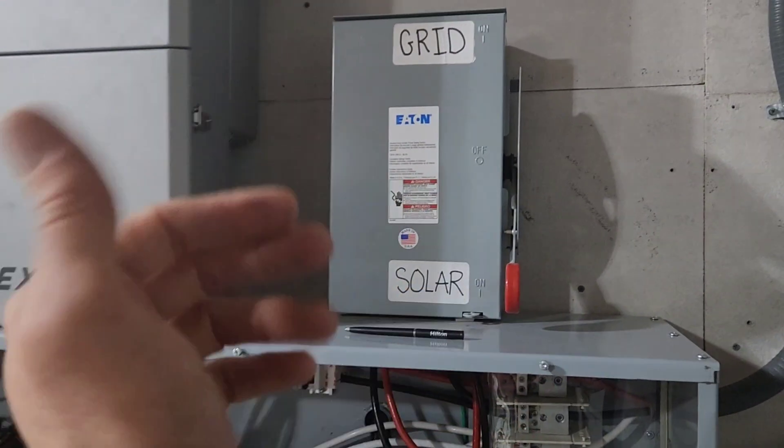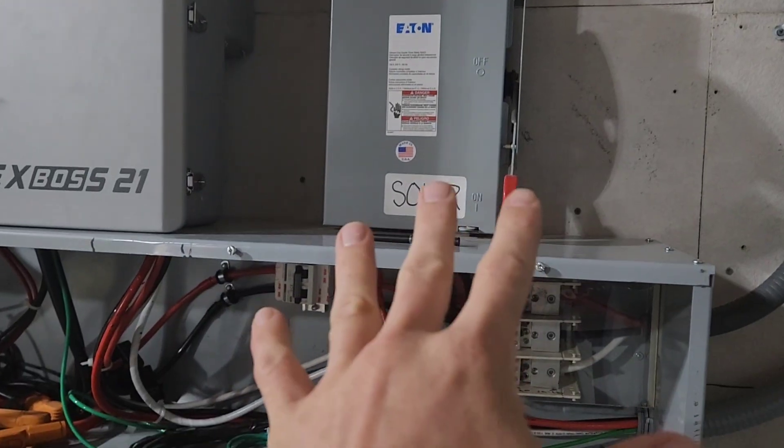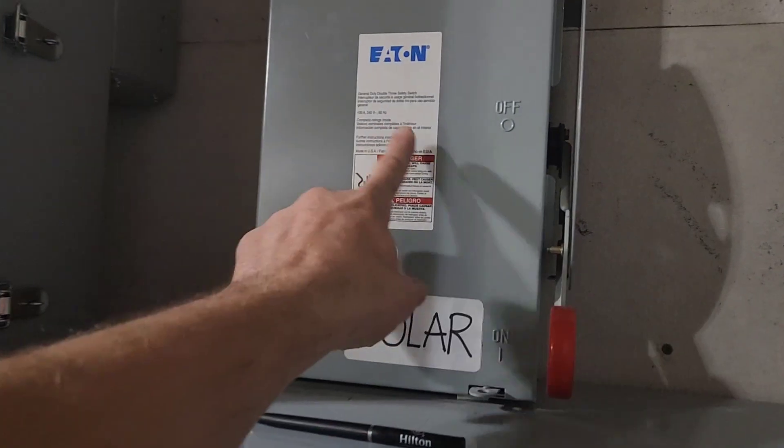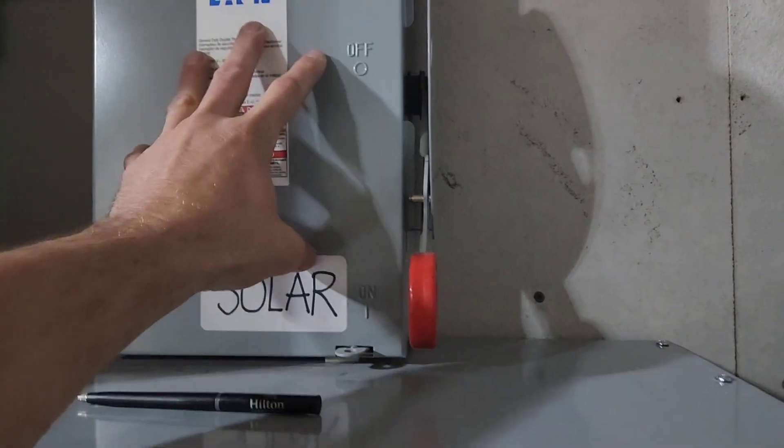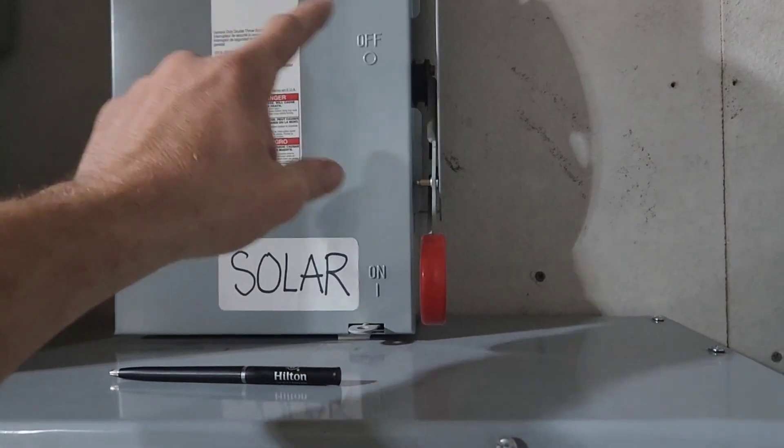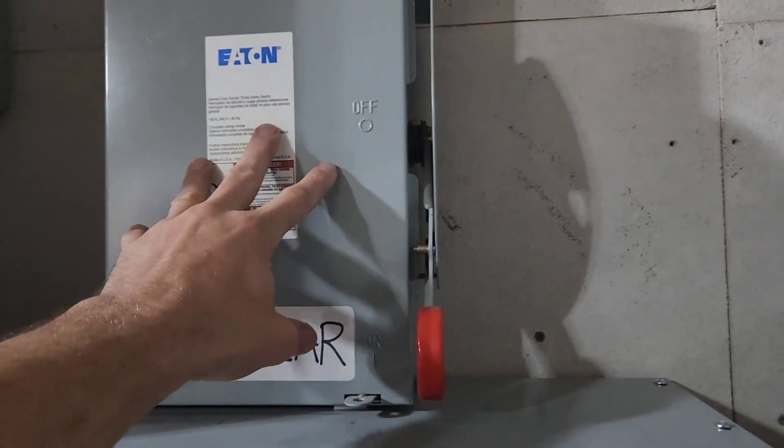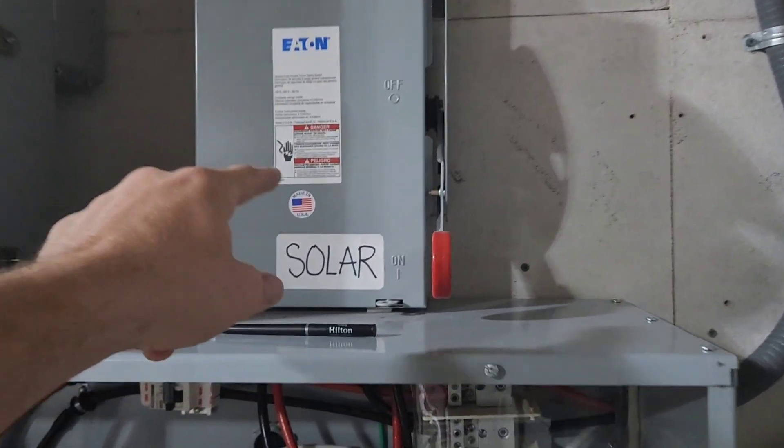But I really like this disconnect switch. I wouldn't be getting rid of it if I didn't have the Grid Boss here to test. And there's some cheap ones on Amazon, but I would definitely go with a name brand transfer switch here because this is where all your power is going through for your house. So don't go cheap on this. But there is a lot of wires in here, you can see that going on.